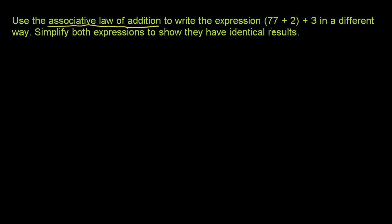Now let me just make that clear. So the way they wrote it right here, they wrote 77 plus 2 in parentheses, and then they wrote plus 3. These parentheses mean do the 77 plus 2 before you add the 3. So if you were to evaluate this, you would evaluate what's in the parentheses first.